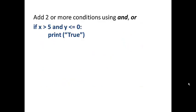You can add two or more conditions using and or or. For example, if x > 5 and y <= 0: print true. In this case, since we use the and operator, if both of those conditions are not met, it will not print true.